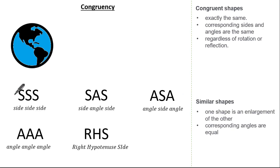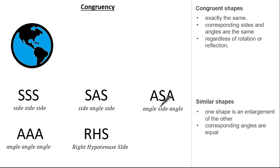These conditions are SSS meaning side side side, SAS meaning side angle side, ASA meaning angle side angle, AAA meaning angle angle angle, and RHS meaning right angle hypotenuse and side.